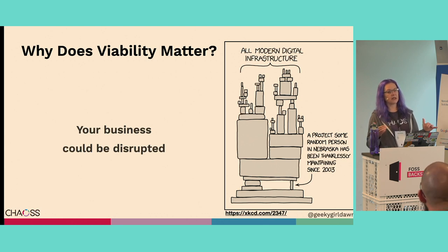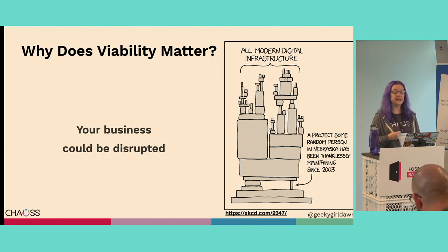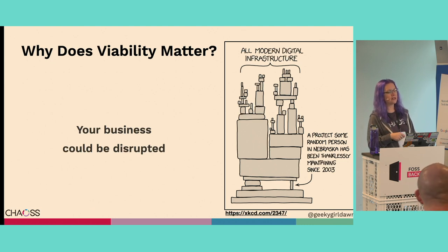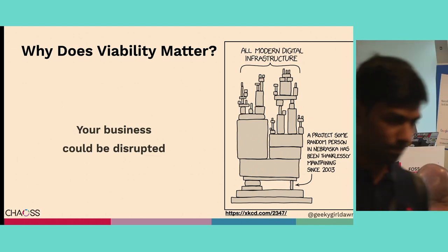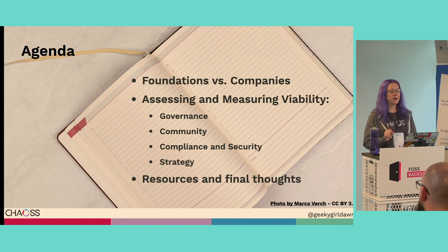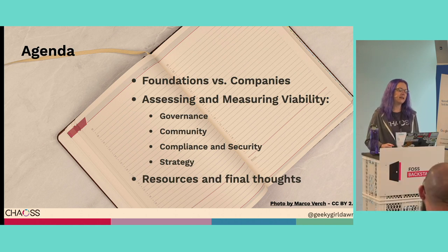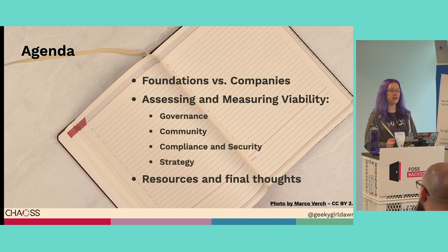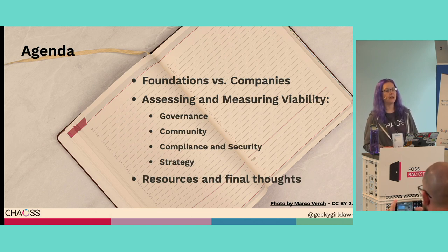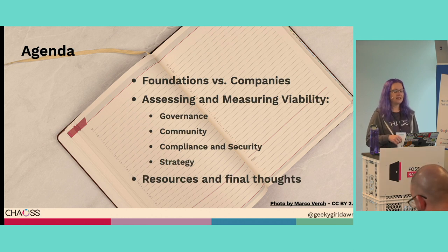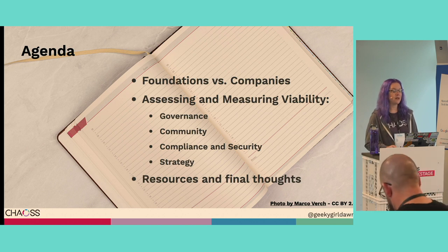It's particularly important to look at the viability of any open source projects that are critical for your ability to deliver products to your customers or users. This could include products built on top of open source technology where those projects are integrated into your products or infrastructure. If you couldn't easily swap out that project with a drop-in replacement, you should be assessing its viability and understanding any risks. This talk will compare projects under neutral foundations versus those controlled by companies, and look at how people leading and contributing to the project can influence viability across four broad areas: governance, community, compliance and security, and strategy.